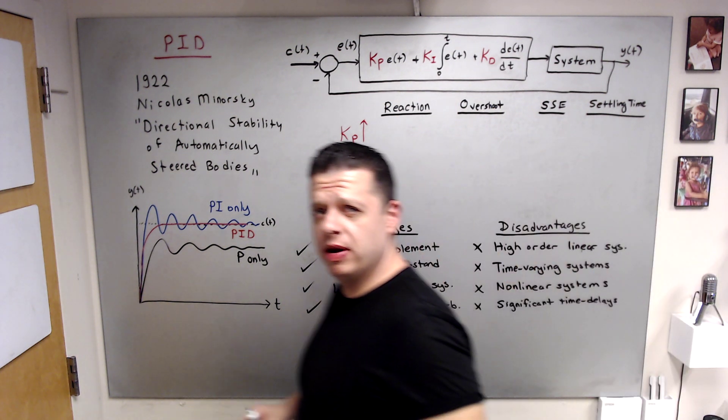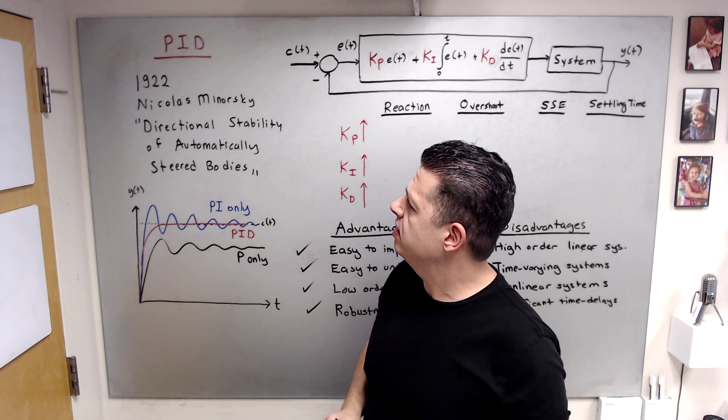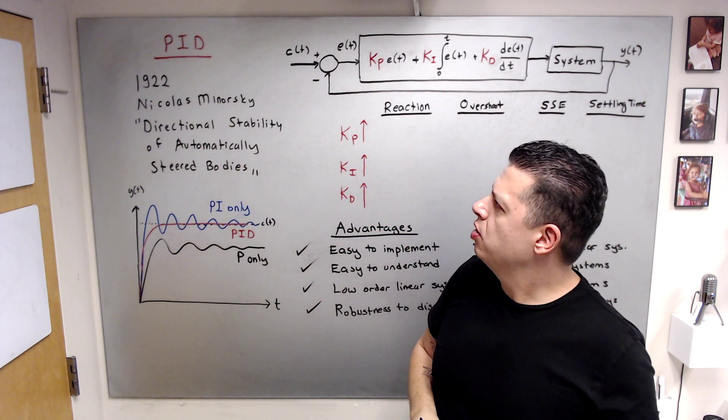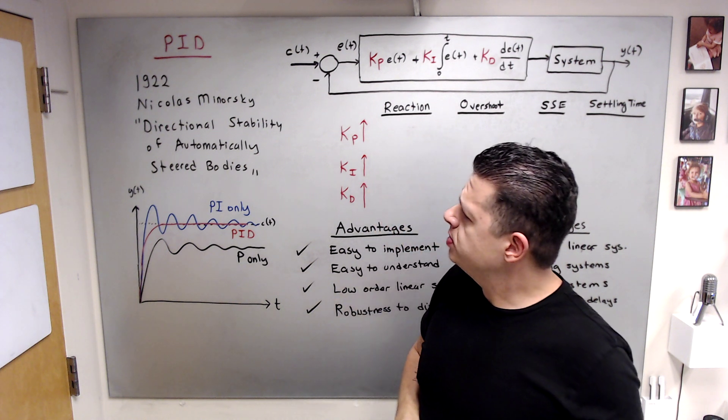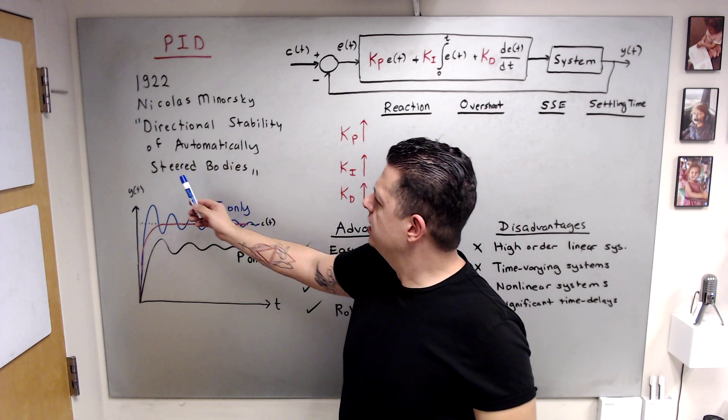All right, let's talk about PID. First of all, PID was first invented in 1922 by Nicolas Mirosky, a French scientist, on his paper titled Directional Stability of Automatically Steered Bodies.